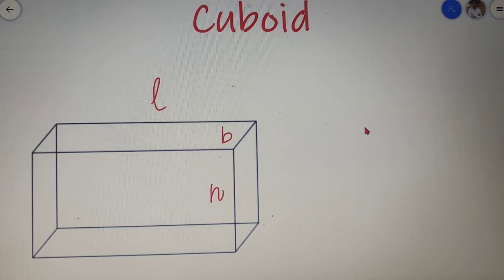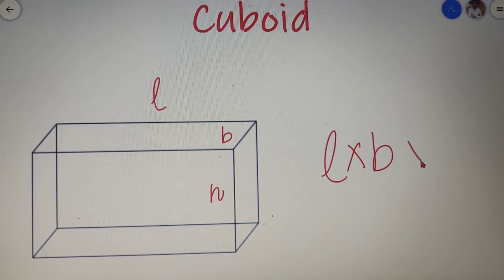Every three-dimensional figure has an additional property by which it can hold some amount of liquid inside it and the total capacity of liquid that it can hold is called as the volume. Now volume of a cuboid is nothing but the product of its all dimensions. So the volume of the cuboid is equal to length into breadth into height.